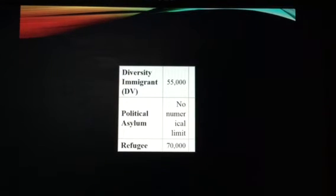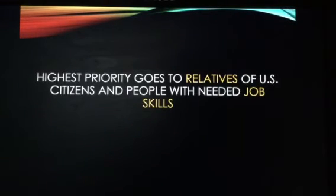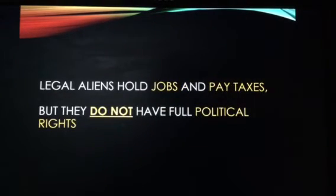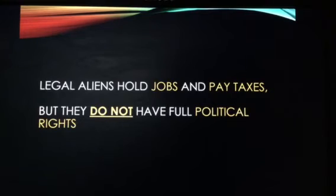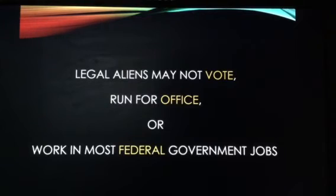Those are the five categories to gain entrance into the United States. Highest priority goes to relatives of U.S. citizens and people with needed job skills. Legal aliens hold jobs and pay taxes, but they do not have full political rights — they cannot vote, they cannot run for political office, and many serve in the federal government in what's known as the civil service system. They must carry identification cards known as green cards, which are issued every 10 years or so and give them permanent residence in the United States for as long as they wish.